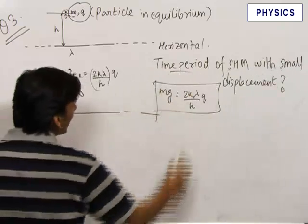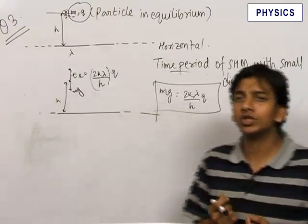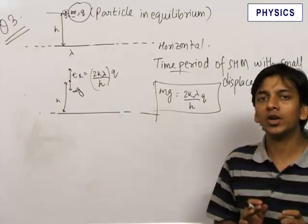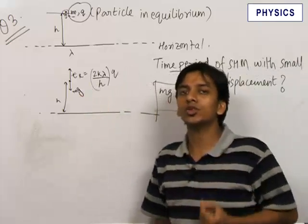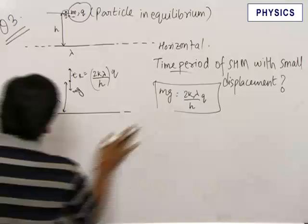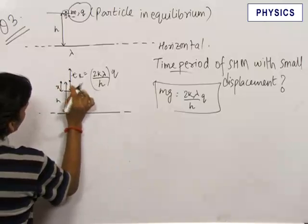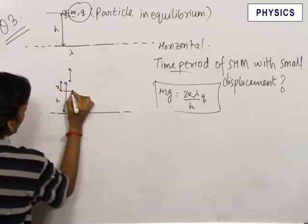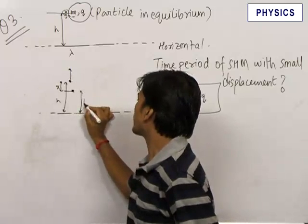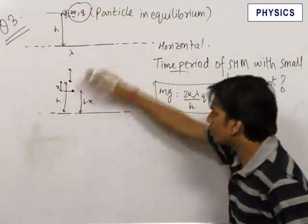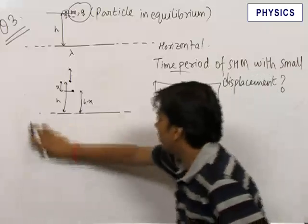To find the time period of SHM, we first displace the particle from the equilibrium position by a small displacement x — this is the standard method. We displace it downward, so it is now at a height h minus x above the wire. We could have displaced it upward as well; it does not matter.